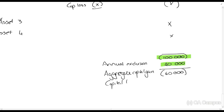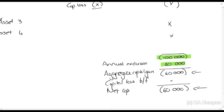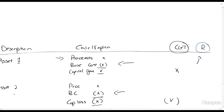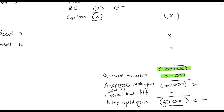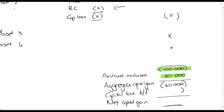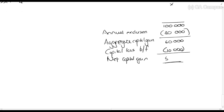From the aggregate capital gain, you deduct any capital losses brought forward from the previous year. If there is a net negative position — an aggregate capital loss — that amount does not go into the rands column. Instead, it is carried forward to the next year and included as a deduction against next year's capital gains. For example, if there was a capital loss brought forward of R10,000, and the aggregate capital gain is R60,000, the net capital gain is R50,000.